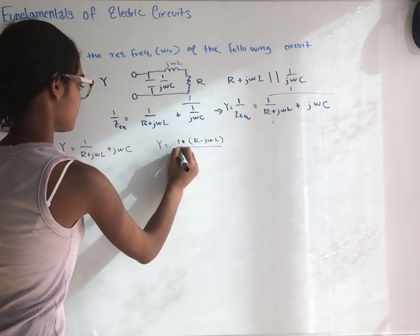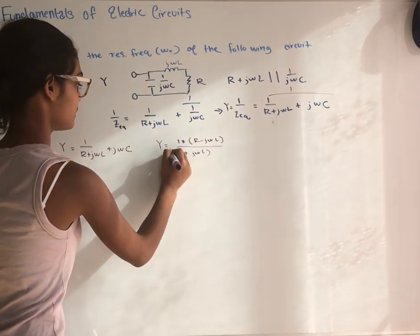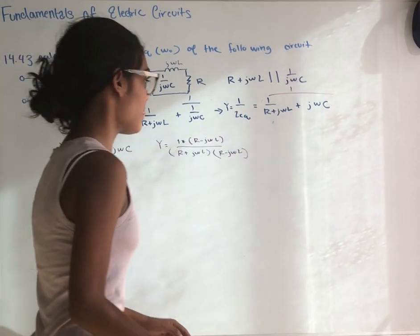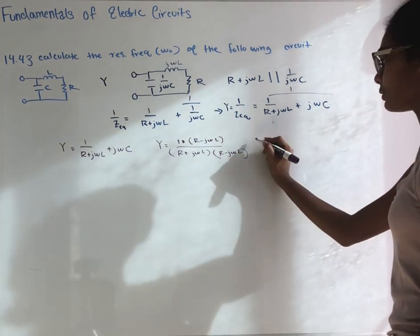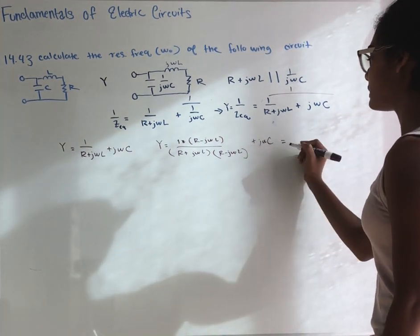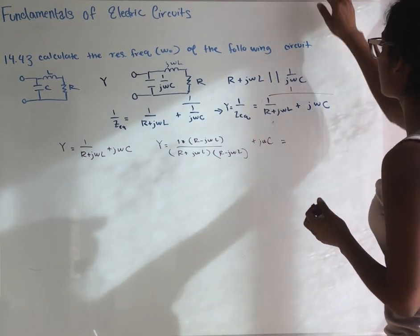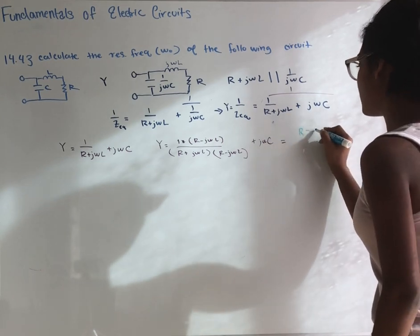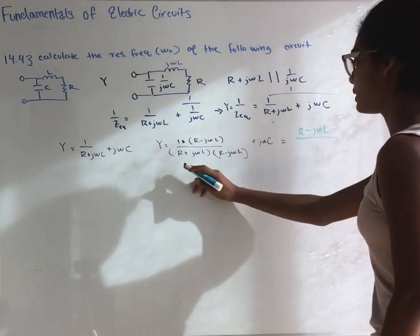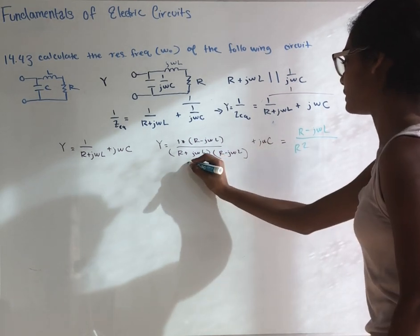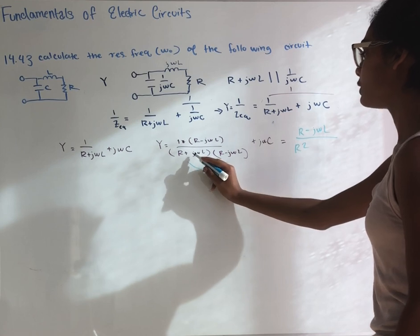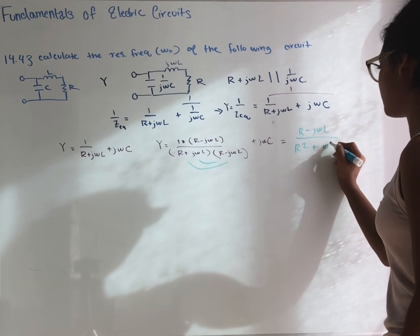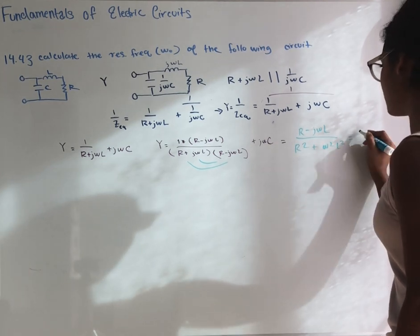We simplify so this equals (R minus j omega L) over — multiplying those out gives R squared, and since j squared equals negative one, the cross term gives plus omega squared L squared — so the denominator is R squared plus omega squared L squared, plus j omega C, equals Y.